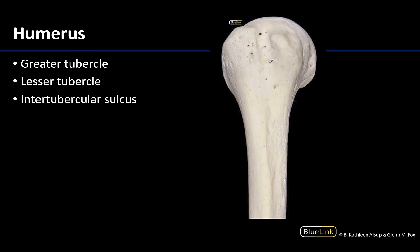Moving to the tubercle portion — we've flipped the humerus to an anterior view. I can identify this because I can see the lesser tubercle, which is always anteriorly facing. The lesser tubercle is the attachment site for the subscapularis muscle. Opposite the head you have the larger greater tubercle, which is always lateral. The greater tubercle has the other three of the four rotator cuff muscles attaching here, which is why it is larger than the lesser, which has only one.